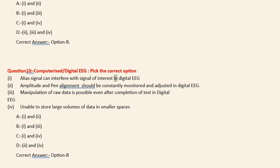Question 10: Computerized/Digital EEG - Pick the correct option: (i) Alias signal can interfere with signal of interest in digital EEG. (ii) Amplitude and pen alignment should be constantly monitored and adjusted in digital EEG. (iii) Manipulation of raw data is possible even after completion of test in digital EEG. (iv) Unable to store large volumes of data in smaller spaces. Options: A. i and ii, B. i and iii, C. i and iv, D. ii and iv. Correct answer: Option B.